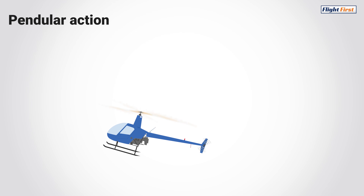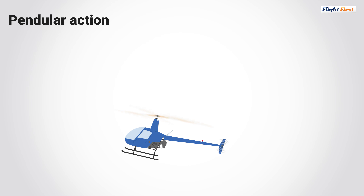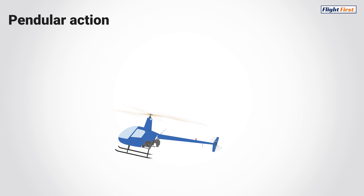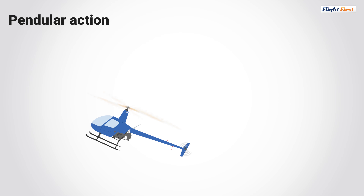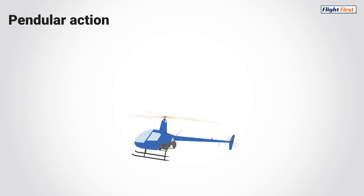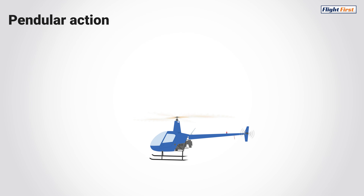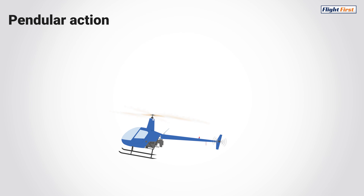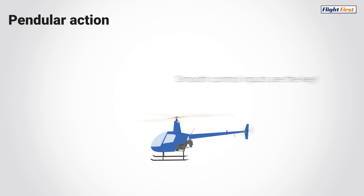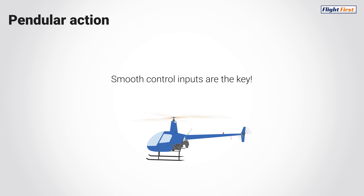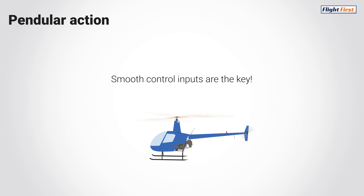A helicopter is suspended from a single point — the main rotor. Therefore it's free to oscillate laterally or longitudinally as a pendulum. To prevent this pendulous movement, the pilot should move the controls smoothly and anticipate what the control movements will do to avoid over-controlling the helicopter.